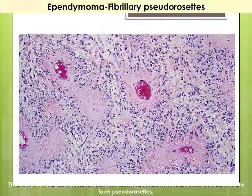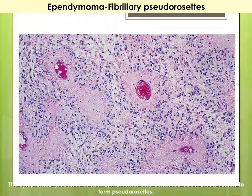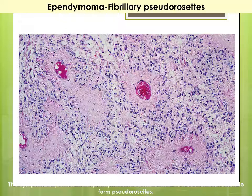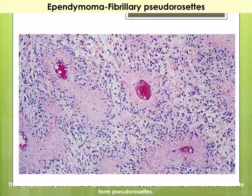The picture of the perivascular pseudorosette shows three prominent sites. The nuclei are rounded and vesicular, arranged around existing blood vessels giving rise to the pseudorosette appearance.